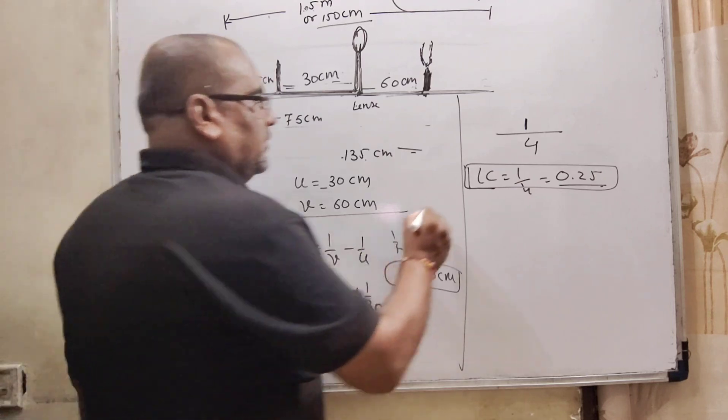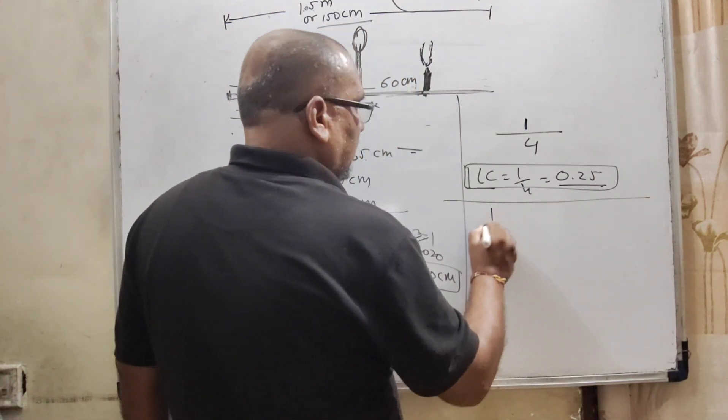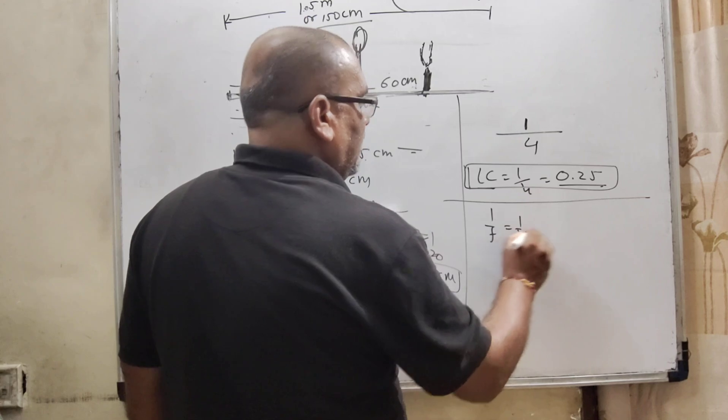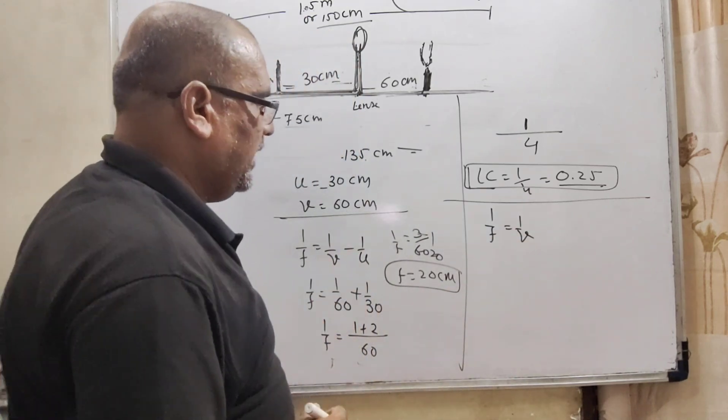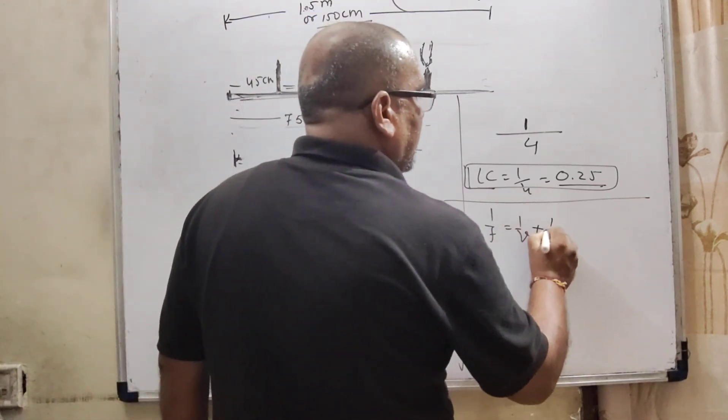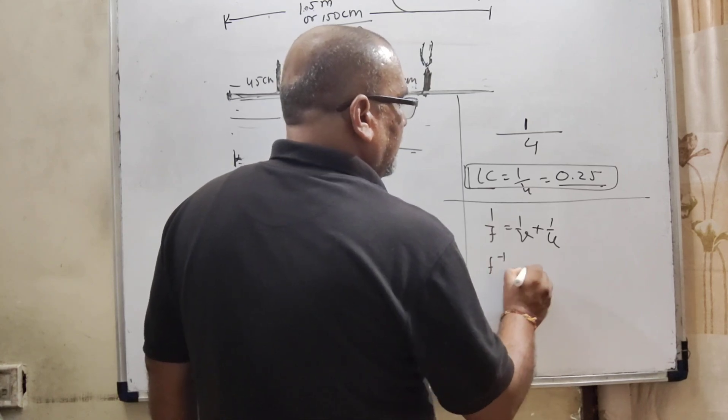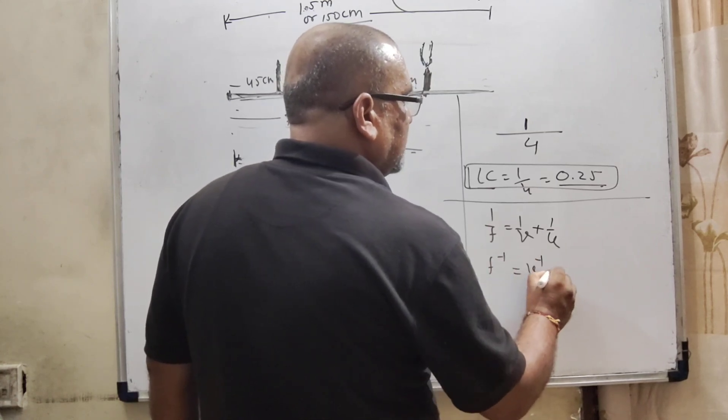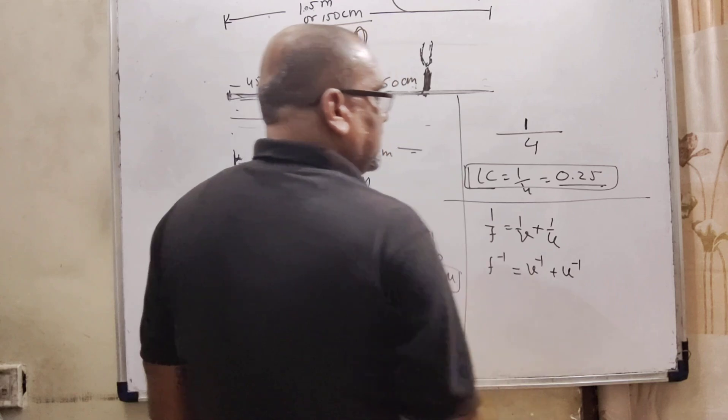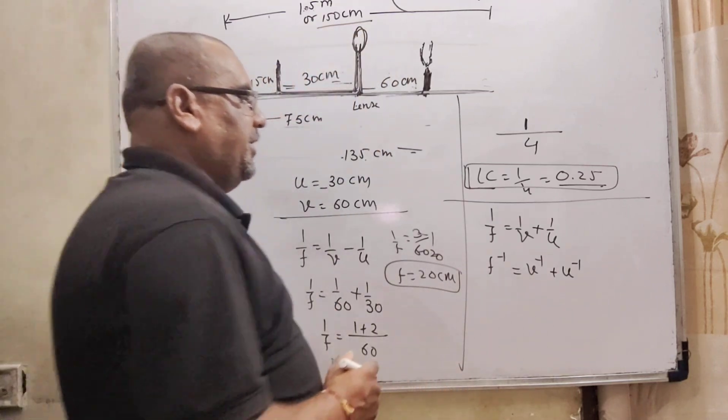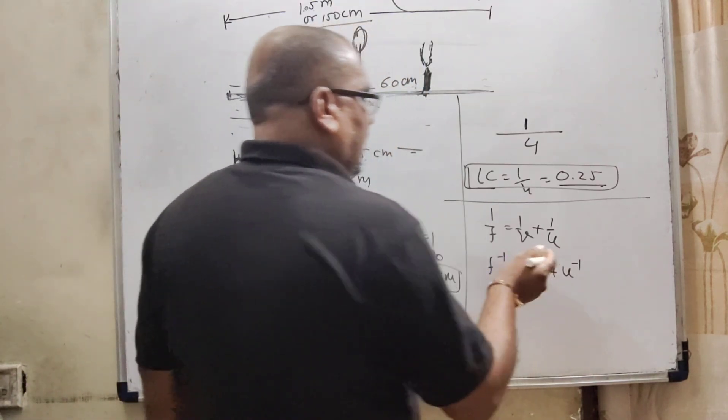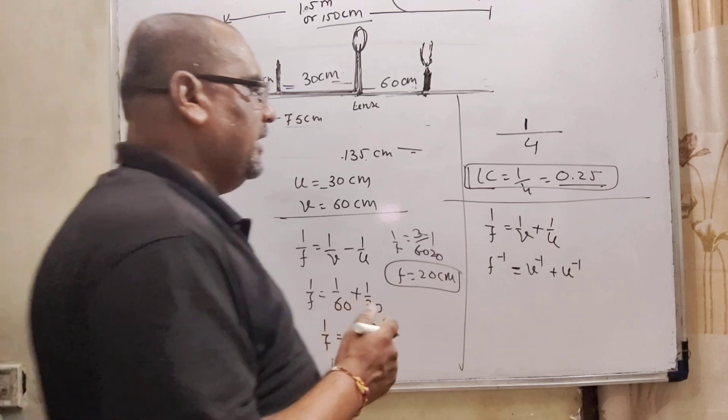So, we have required to differentiate this term. Then, 1 by f equal to 1 by v and this is minus and minus plus 1 by u. Then, it can be written as minus 1 by v minus 1 by u. And differentiate with respect to length, you can say that is delta.